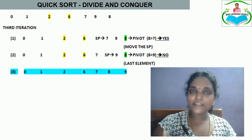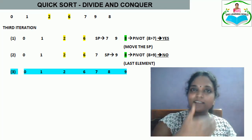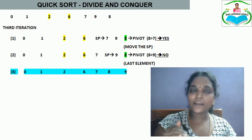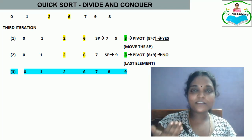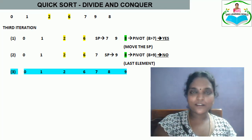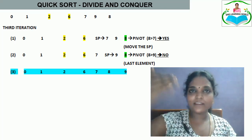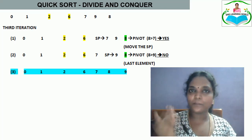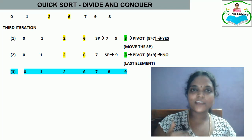In the combine step, all the subarrays are simply joined together by index without any comparisons. In quicksort, the combine step does minimal work — there are essentially no calculations; the combine just concatenates the elements in order.